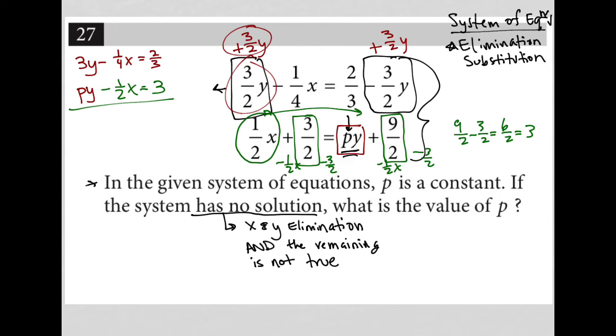The first rule of a system having no solution is that both X and Y must eliminate. They must both cross out. So how do I get my X term to cross out? I don't know how to get my Y term to cross out because I don't know what P is, but I do know how to get my X term to cross out. I can get that to eliminate by multiplying by negative one half.